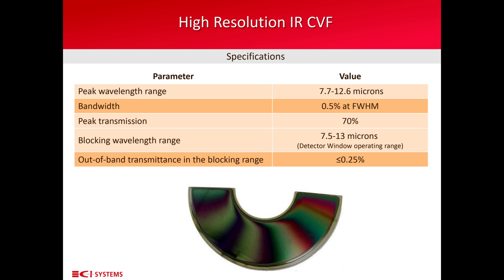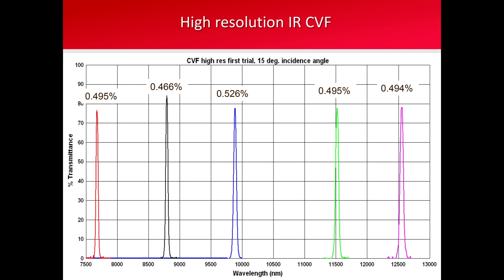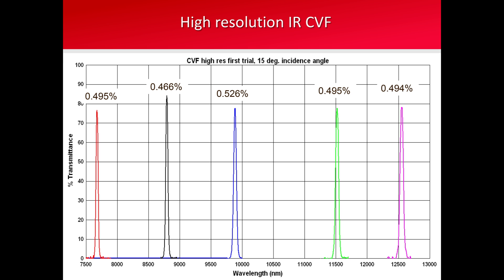We go down to 0.5% of the wavelength, whereas the types shown before in the previous slide, we get to spectral resolutions of 1.5 to 2% of the wavelength. Here in this slide, I show the measurement results of transmittance at different positions around the circumference of a high-resolution circular variable filter. We can see five peaks between 7.8 and 12.6 microns, all within the specification of 0.5% peak width.